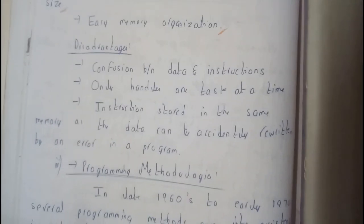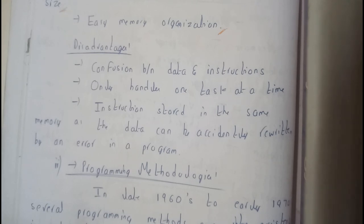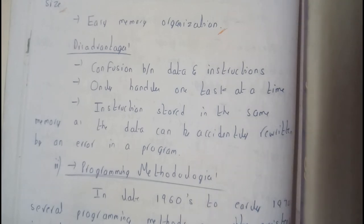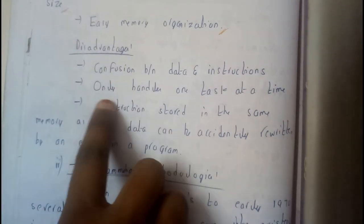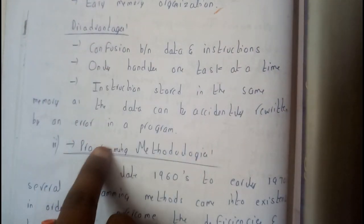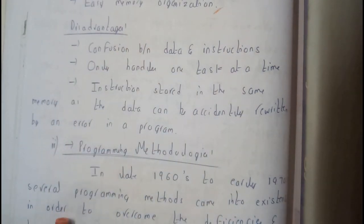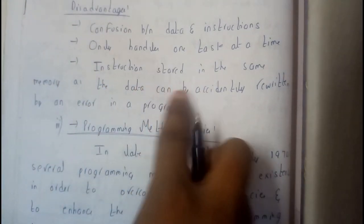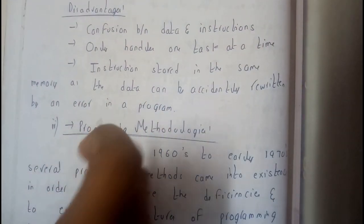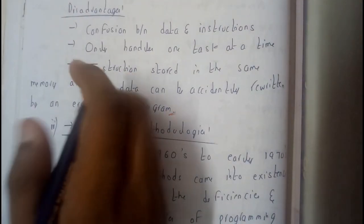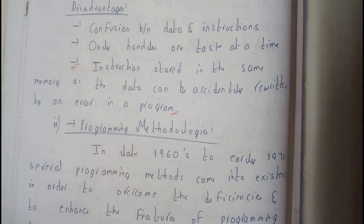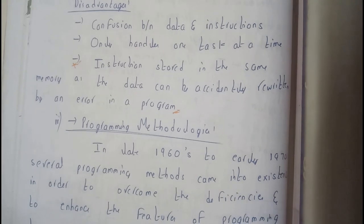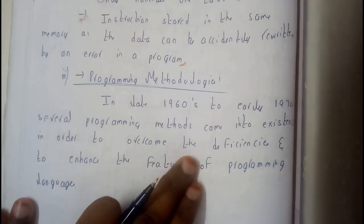A disadvantage is the confusion between data and instructions. As data and instructions are stored in the same memory location, there can be much confusion due to that issue. Additionally, instructions stored in the same memory as data can be accidentally rewritten by an error in a program — this is one of the most important aspects, since errors in programming can affect the whole source.